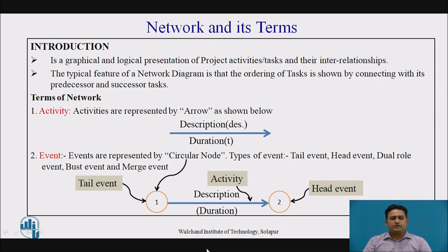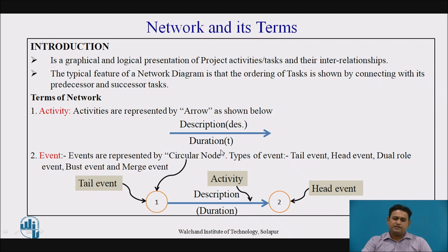Now, in this particular network diagram, we have to see the terms involved. The first one is the activity. An activity is a portion or part in the network diagram which is going to consume time as well as resources for its completion. Activities are represented by arrows. Here, we see arrows above which there is a description and below there is a duration. The description may be the name of the particular activity or task. The length of the arrow has no significance.